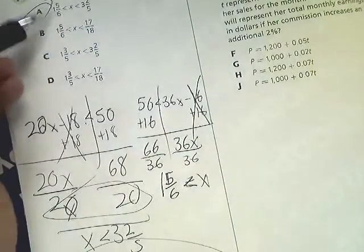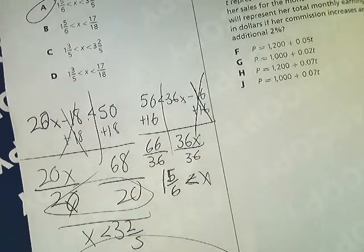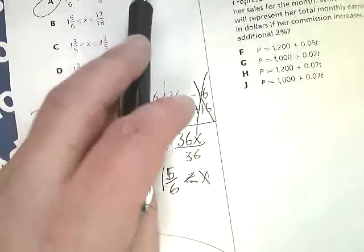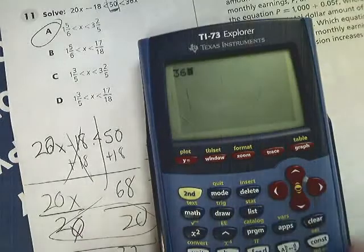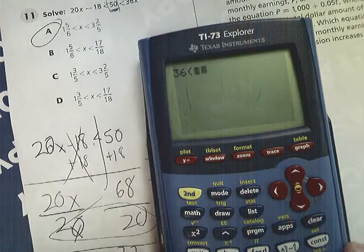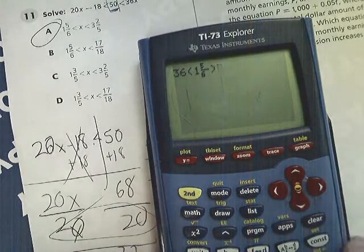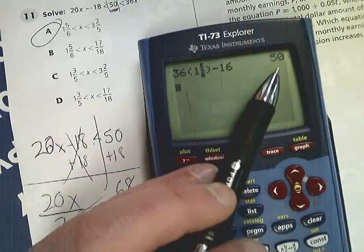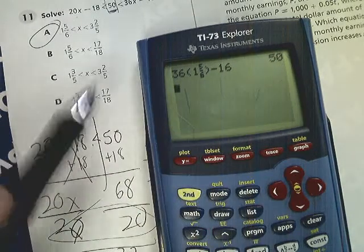You could also try plugging in 1 and 5 sixths for x here. So you do 20 times 1 and 5 sixths minus 18, and see if it could pop out at 50. Even though it's supposed to be less than. And if it doesn't work, try 1 and 5 sixths over here, which is where it would actually work. Because it's one of the answer choices, you have to try it in both though. See, that gives you 50. Unless it says find one that's absolutely less, or in the solution set is usually what they call it. This method would work.